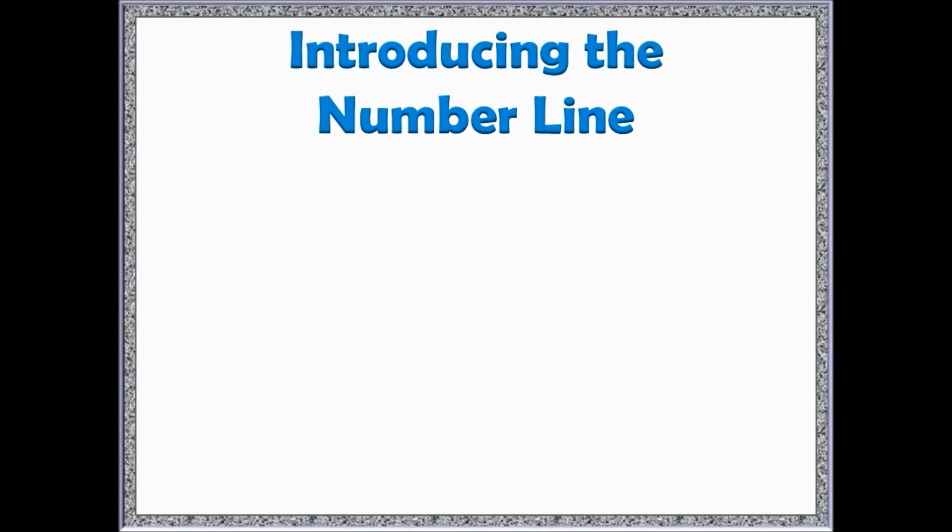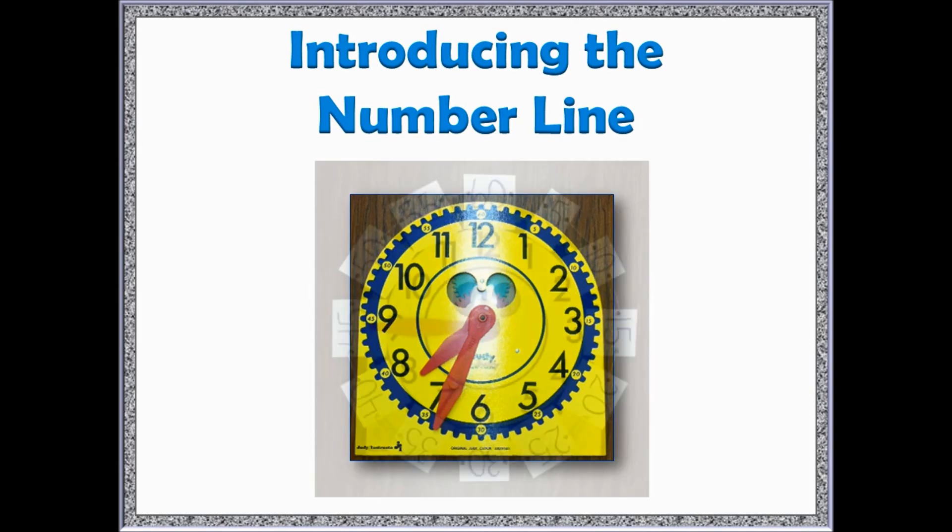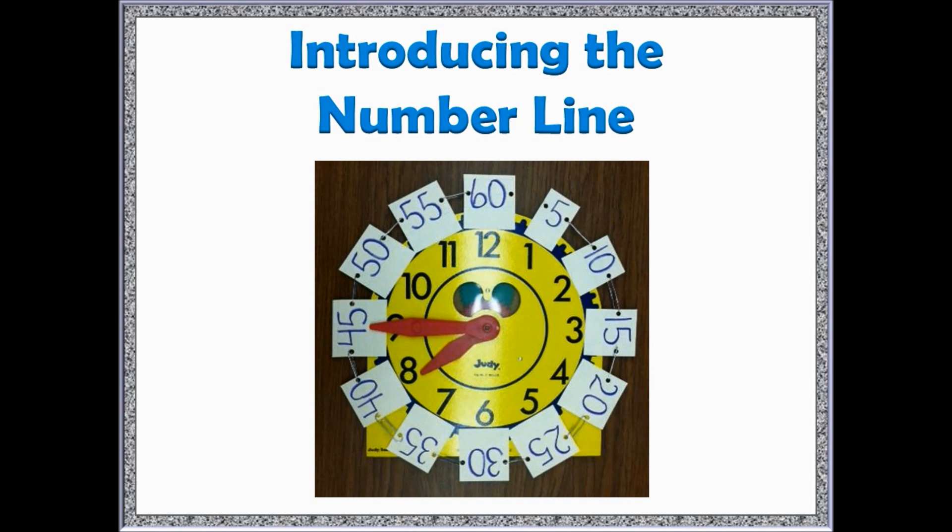When introducing the number line as a tool for solving elapsed time problems, begin by reviewing the second grade standard of telling time to the nearest 5 minutes. To help review, practice skip counting using the clock. As the class skip counts by 5s, place the 5 minute intervals on the clock. Then, review telling time to the nearest 5 minutes.